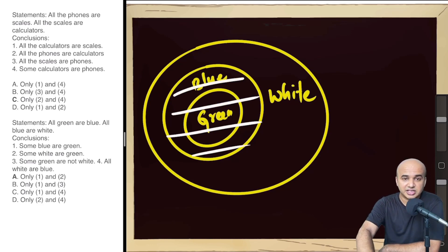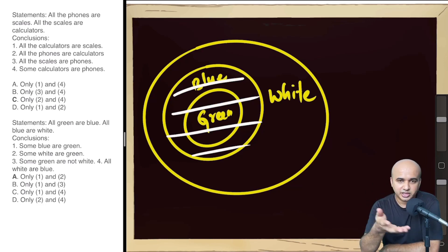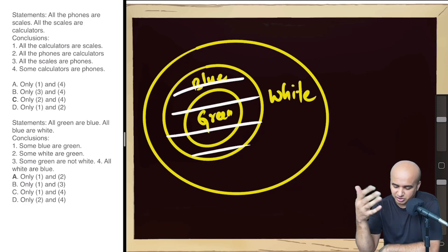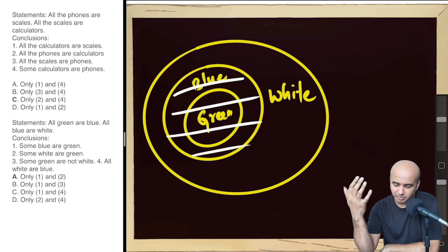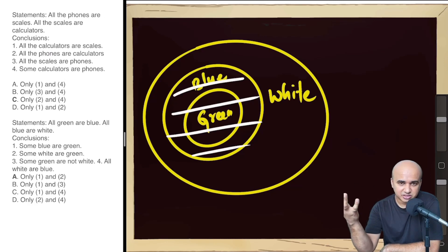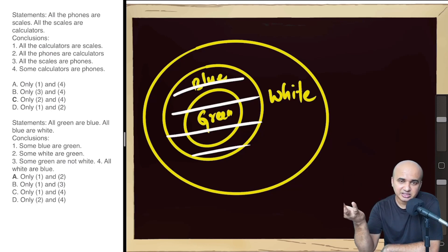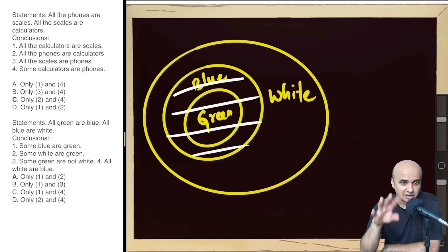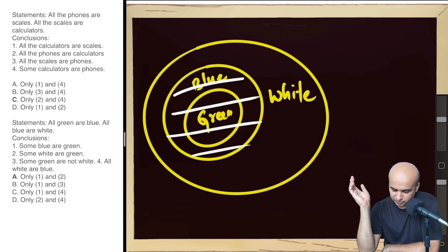That covers the syllogism questions. The Venn diagram representation is the easiest way to solve them. You don't have to draw this — you just imagine it in your head, look at the conclusions, and see whether they actually follow or not. Now let's move towards the next topic: coding and decoding.